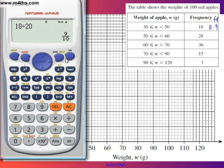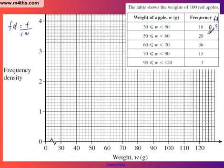Let's do the next one. Now frequency is 28, and the class width is 10, so 2.8. Then 36 and the class width is 10, so 3.6.